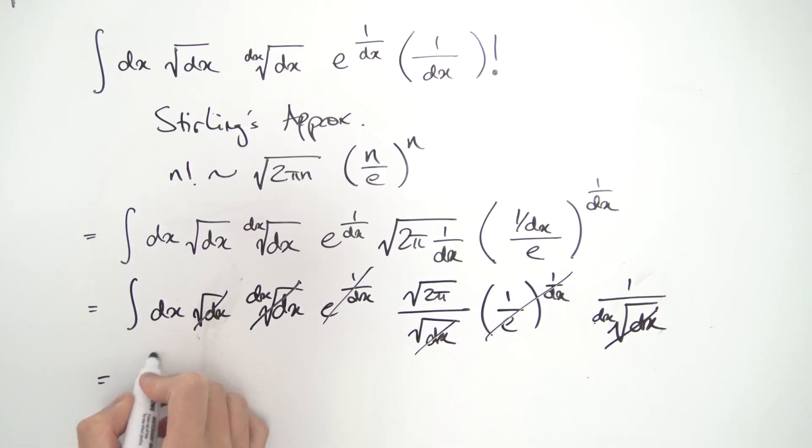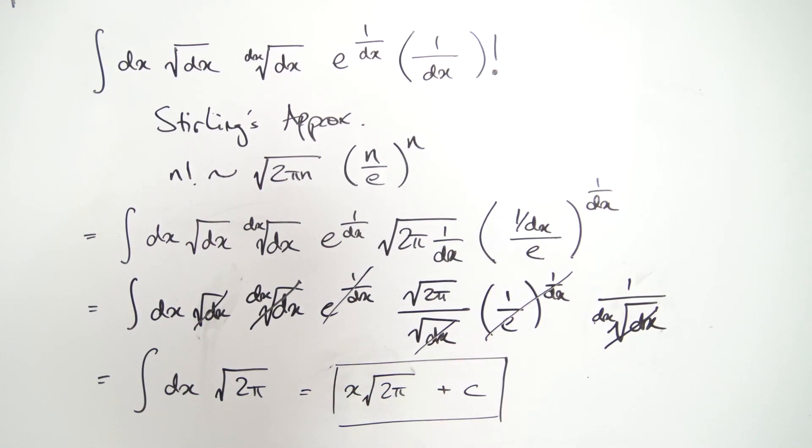What are we left with? We're left with the integral of dx times this square root of 2 pi. This is very easy to evaluate. This is just a constant. So this just becomes x square root of 2 pi, and then plus c, and then we're done. And that's how you evaluate this one mess of an integral.